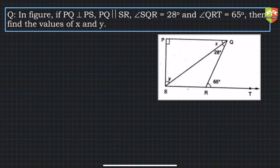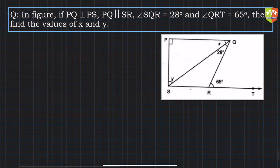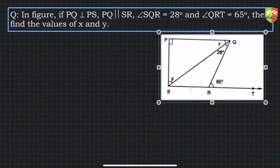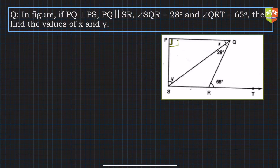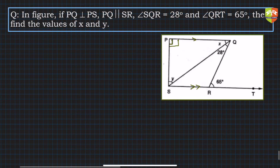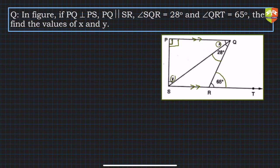Welcome again to another problem solving session on triangles. The given question says: if PQ is perpendicular to PS — so this angle is 90 degrees — PQ is parallel to SR, and angle SQR is 28 degrees, angle QRT is 65 degrees. We have to find the values of x and y.